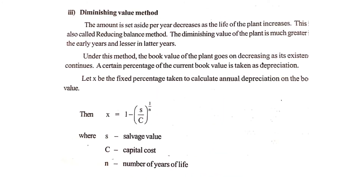The third method is the diminishing value method, also called the reducing balance method. In this method, the amount set aside per year decreases as the life of the plant increases. A fixed percentage is used to calculate the annual depreciation. The formula is: x = 1 − (S / C)^(1/n), where S is the salvage value, C is the capital cost, and n is the number of years. As the plant's existence continues, the plant value decreases, and this percentage captures that reducing depreciation.